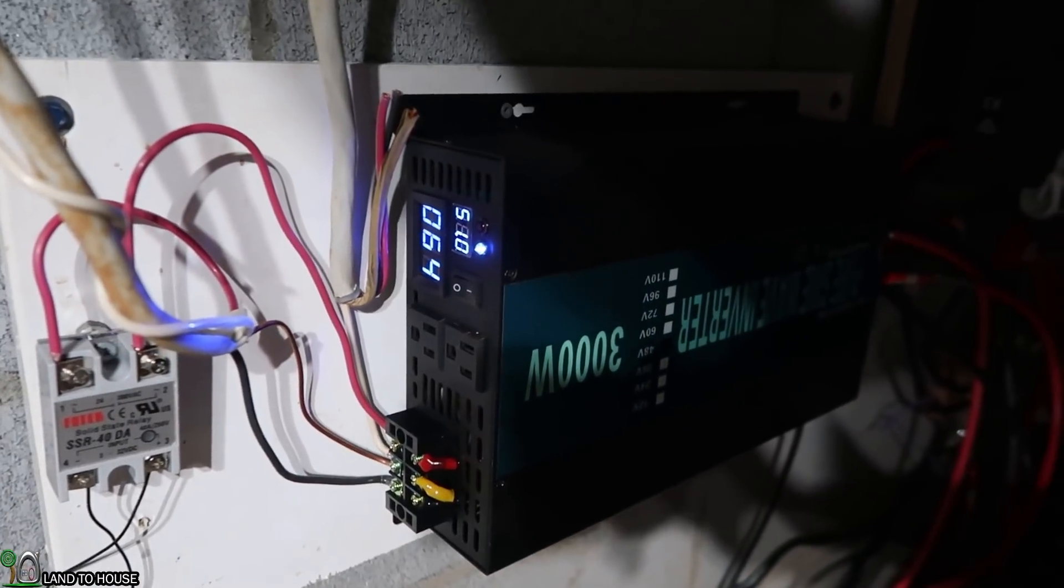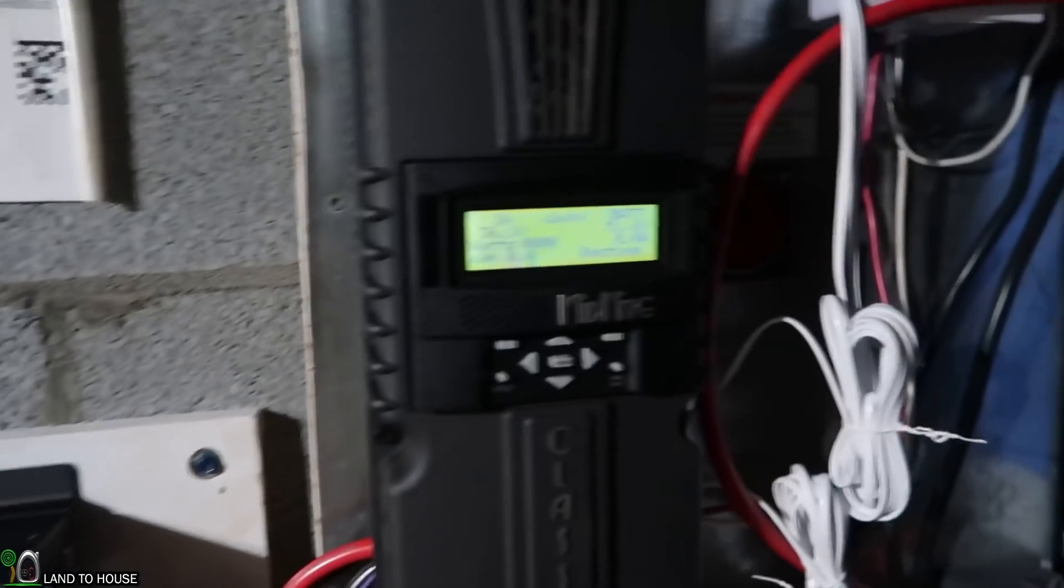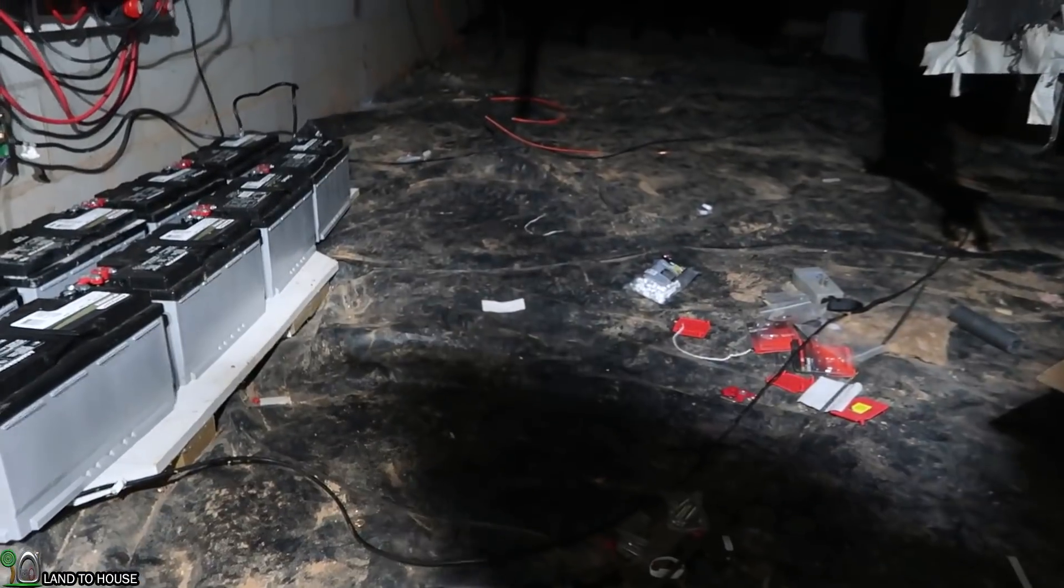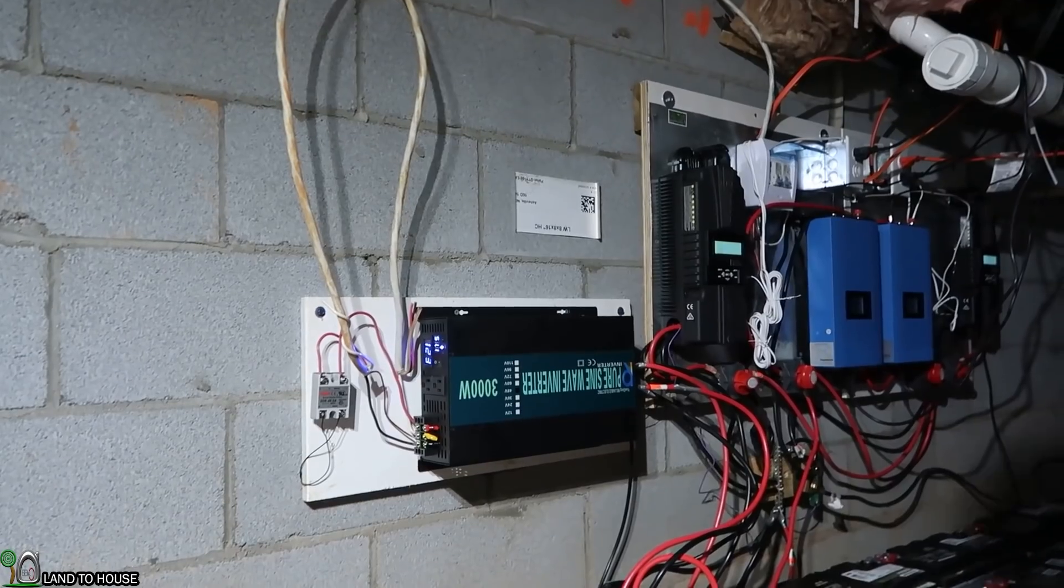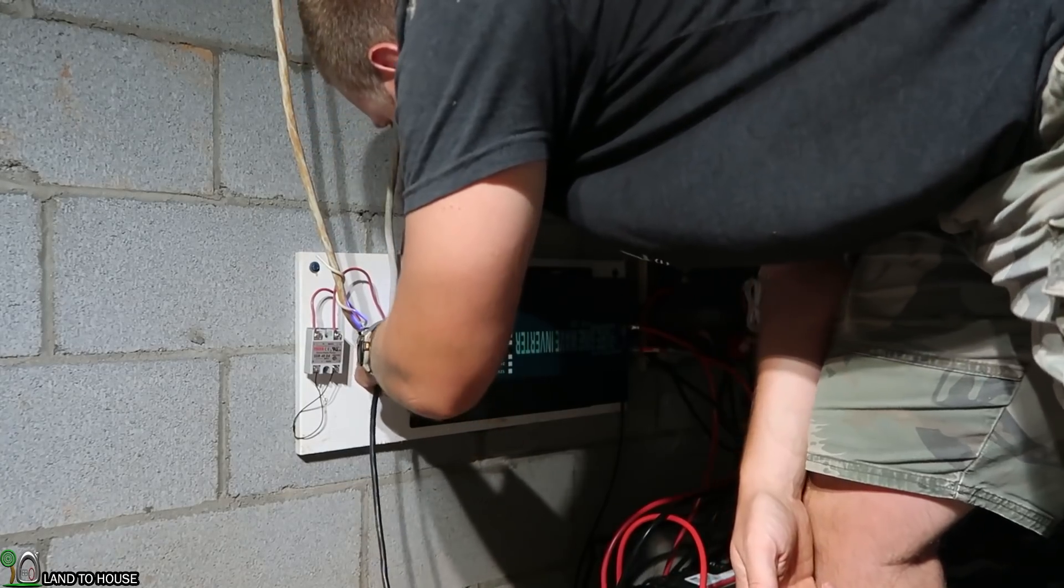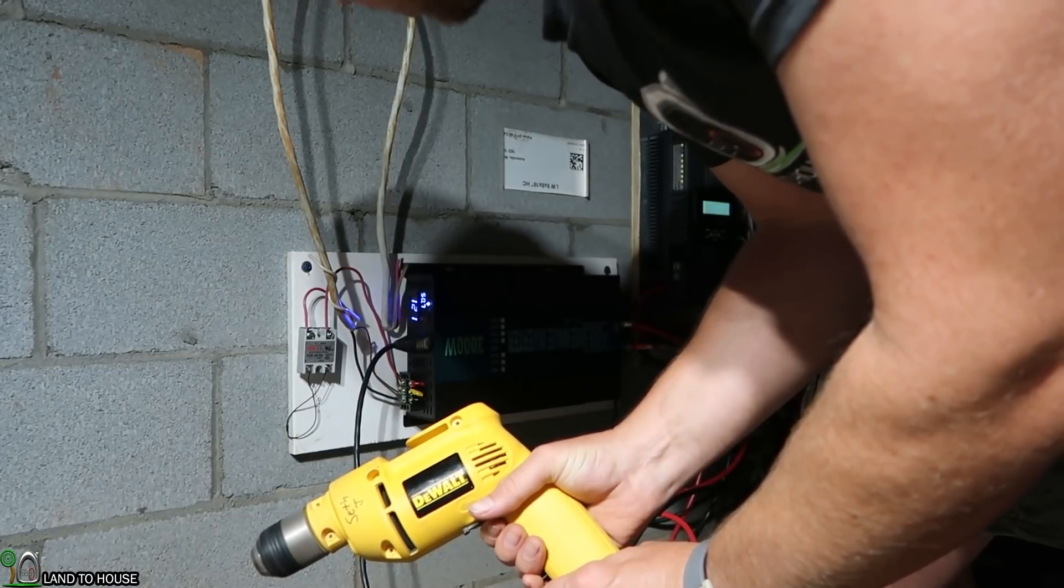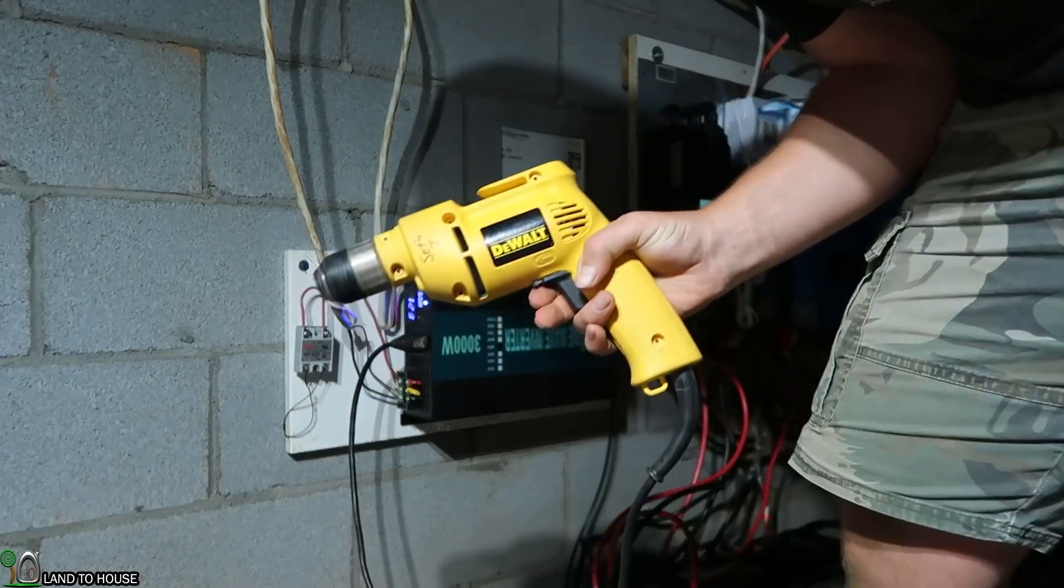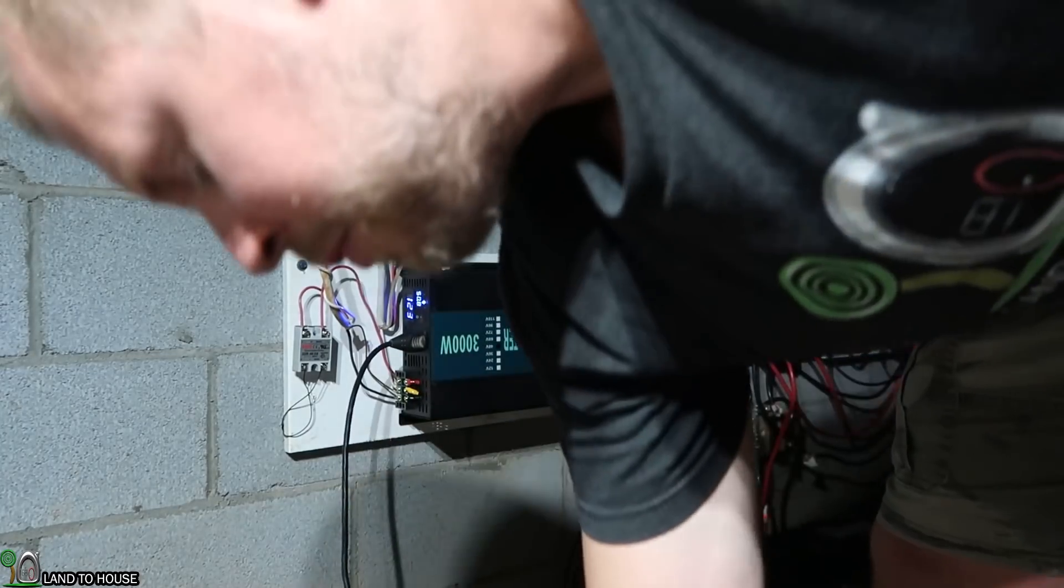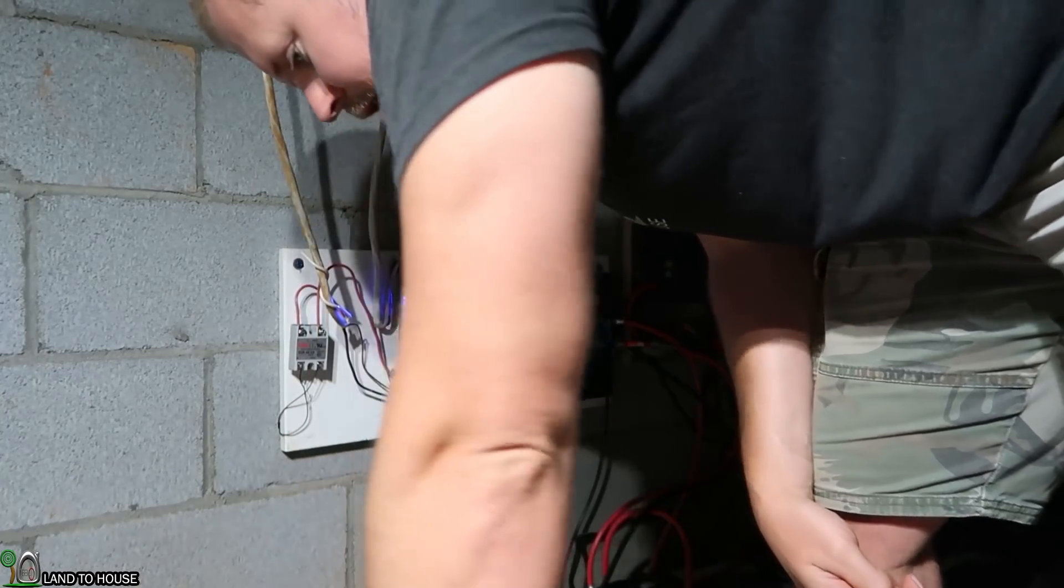All right. So we got 51.1 right there. 51.6. All right, I've got a 600 watt drill down here. We can connect to this inverter and see how well it's working. Well, it seemed pretty smooth. That's pretty good. Very nice.